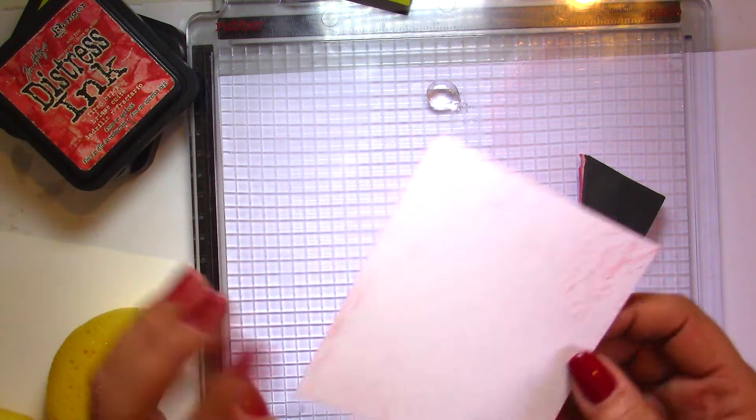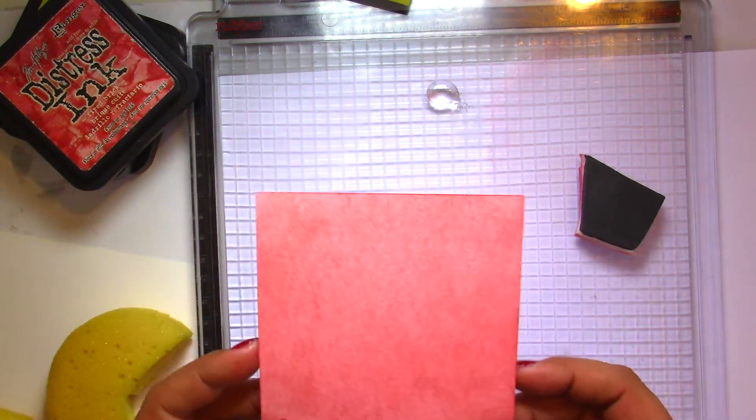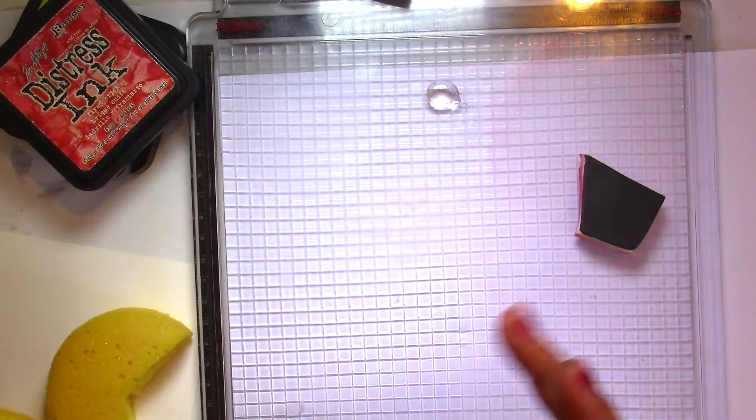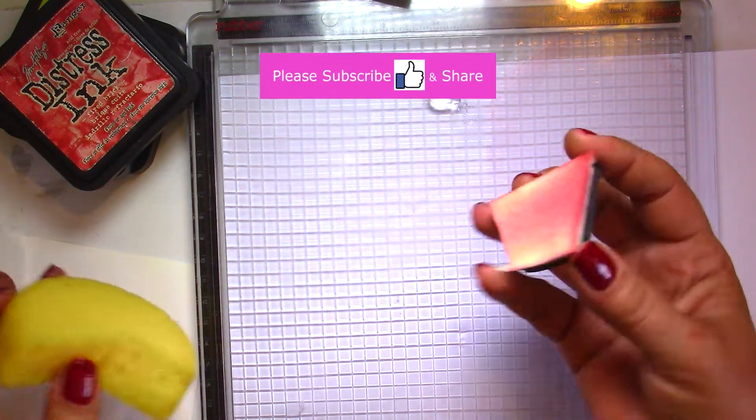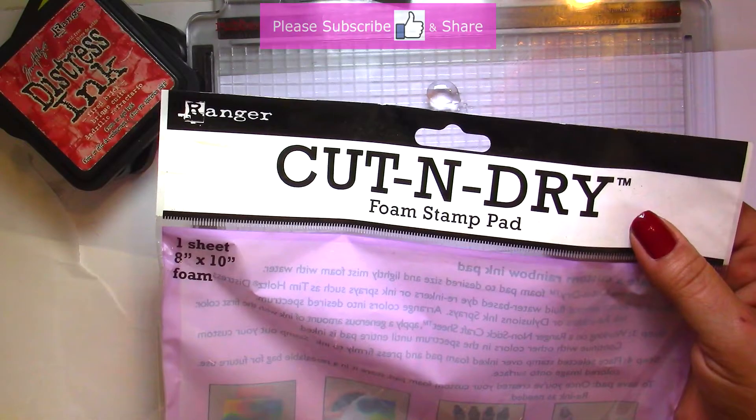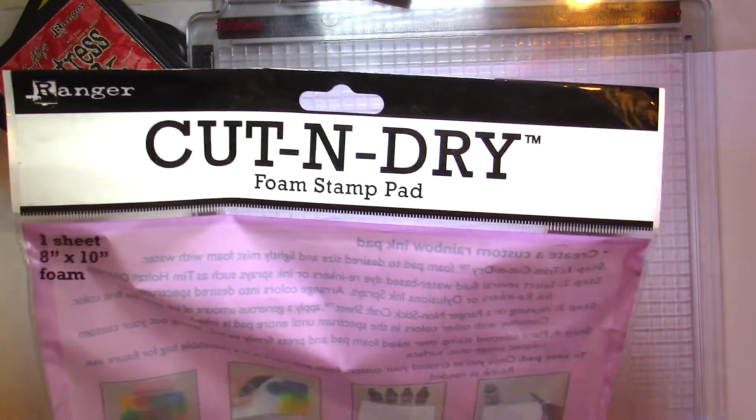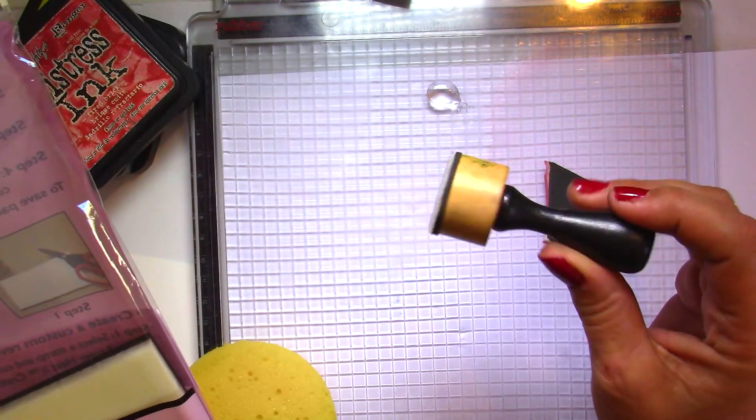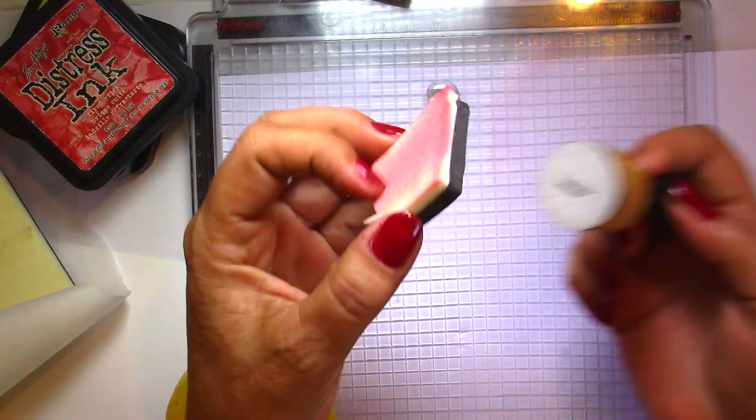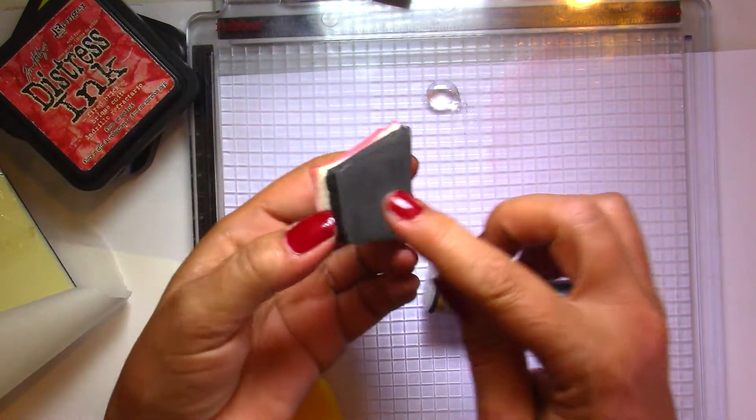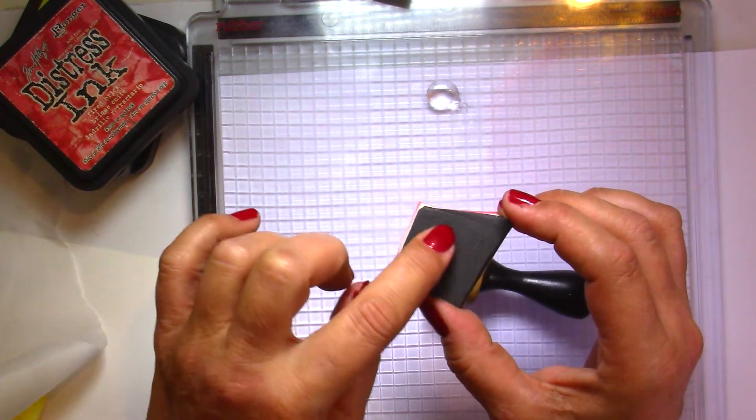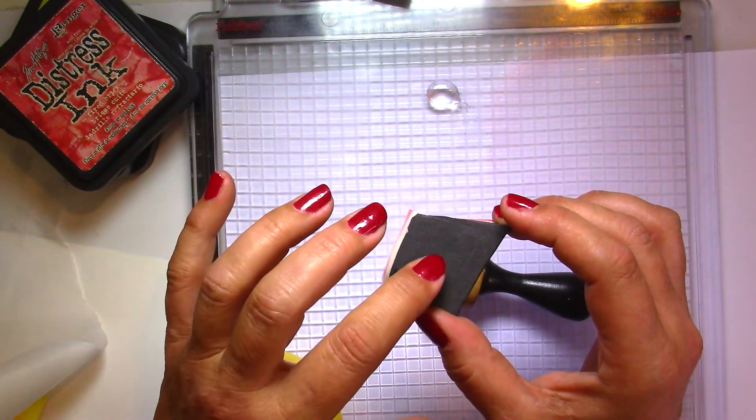You can use this technique on any kind of paper. I'm using just regular cardstock, no brands. I've used it on different kinds of paper and it just works perfectly. These are foam stamps from Cut and Dry.